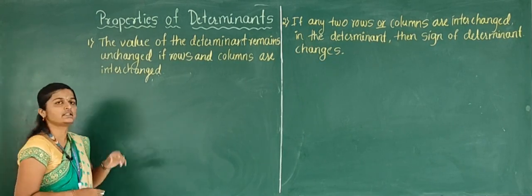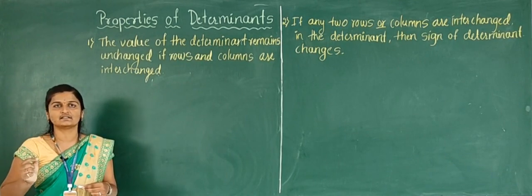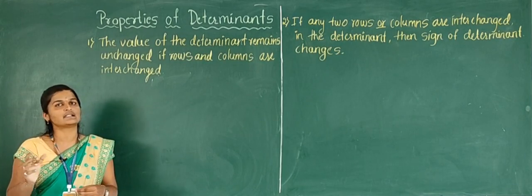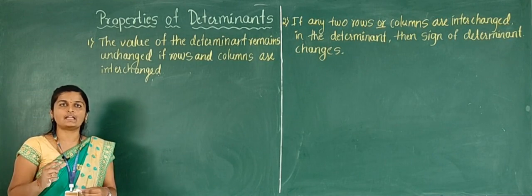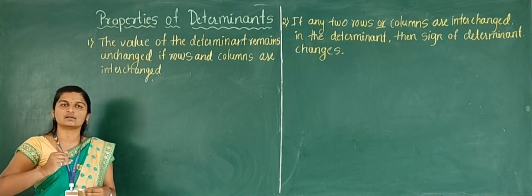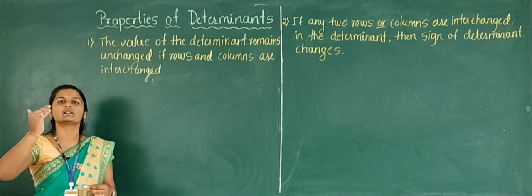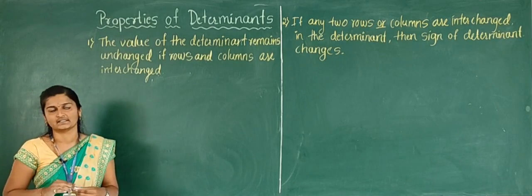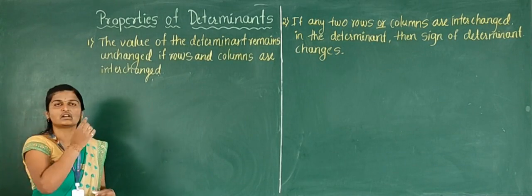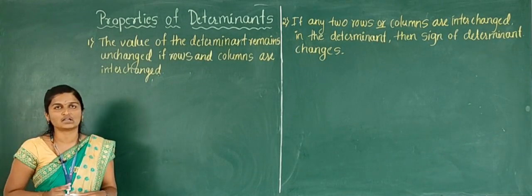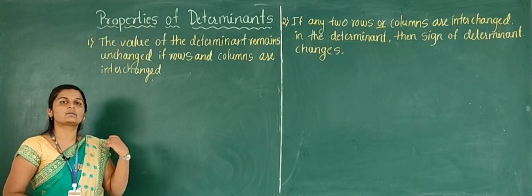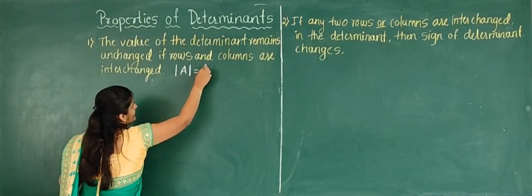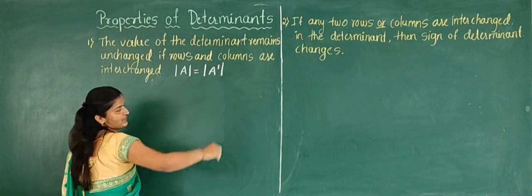The first property: the value of the determinant remains unchanged if rows and columns are interchanged. So the determinant value is unchanged if rows and columns are interchanged. This operation gives the transpose of a matrix. So the determinant of A is always equal to the determinant of A transpose. That is the first property.